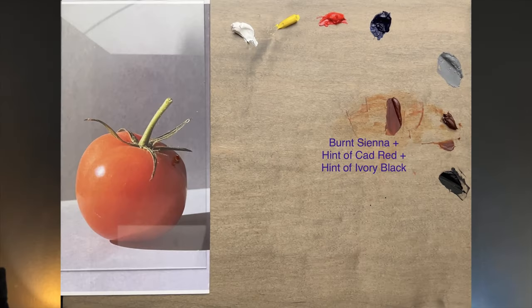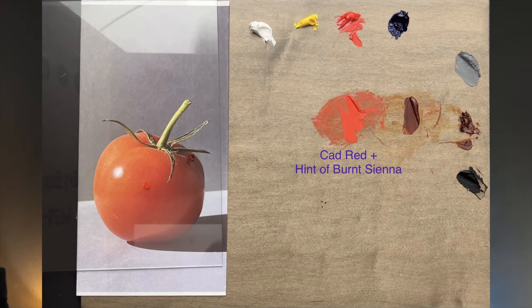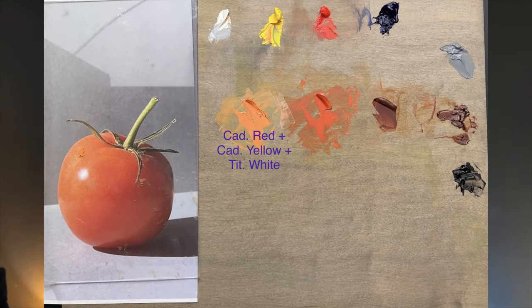The dark value of the tomato is achieved by mixing burnt sienna with hints of cadmium red light, slowly increasing the amount of cadmium red light until you get the desired color. The middle value is achieved by mixing burnt sienna with larger amounts of cadmium red. The light value of the tomato is achieved by mixing cadmium red, titanium white, and cadmium yellow.